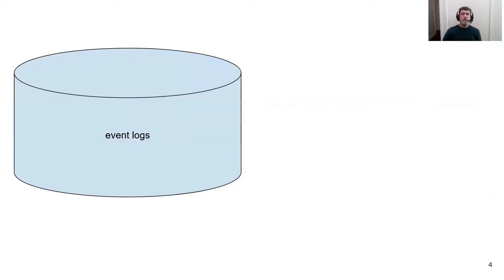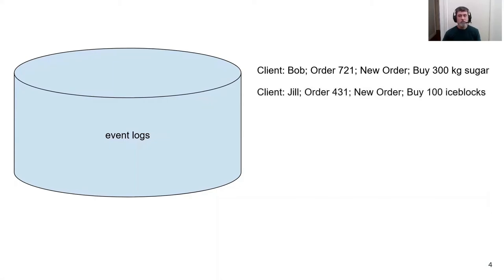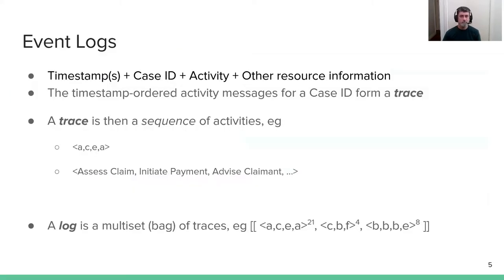So what do I mean by an event log? An event log is a sequence of event data with a recognized case ID. We have to be able to distinguish activities, we have to be able to sequence them, usually with timestamps, and we have to be able to distinguish cases, so the activity of one particular order in a system, for example. More formally, we have the timestamp, the case ID, and the activity. Each timestamp-ordered activity forms a trace—a trace is a sequence of activities—and a log is then a multi-set of traces.